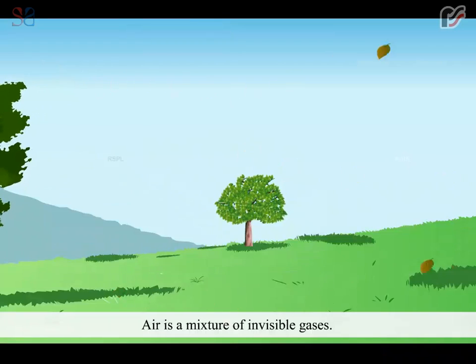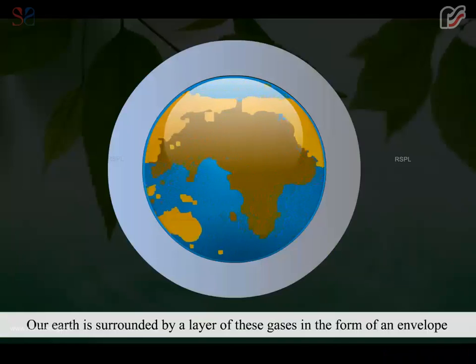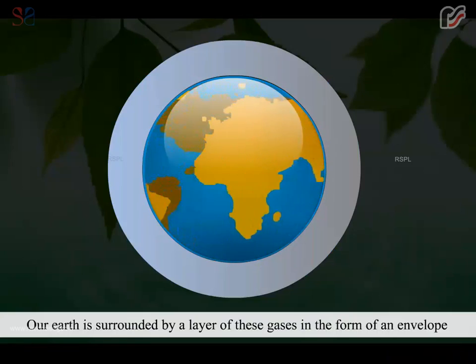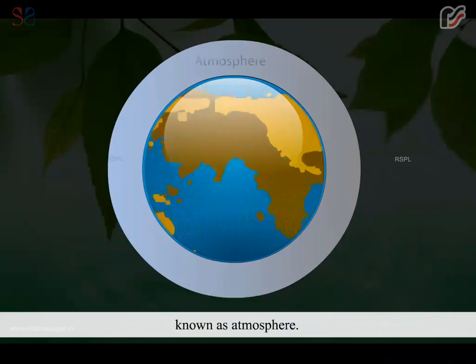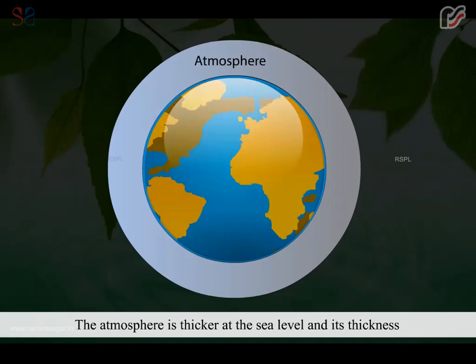Air is a mixture of invisible gases. Our earth is surrounded by a layer of these gases in the form of an envelope known as atmosphere. It extends up to several hundred kilometers above the earth's surface. The atmosphere is thicker at the sea level and its thickness decreases with the increase of height.